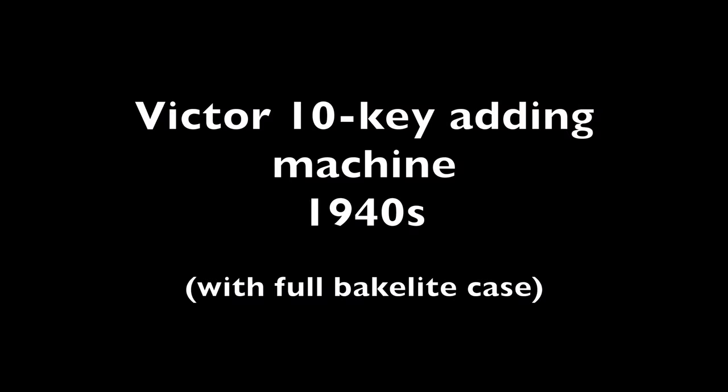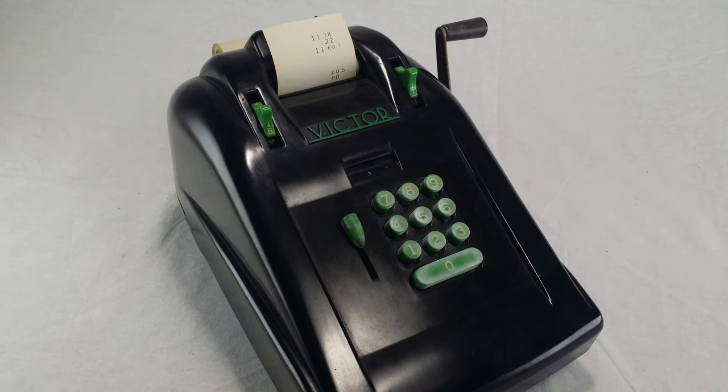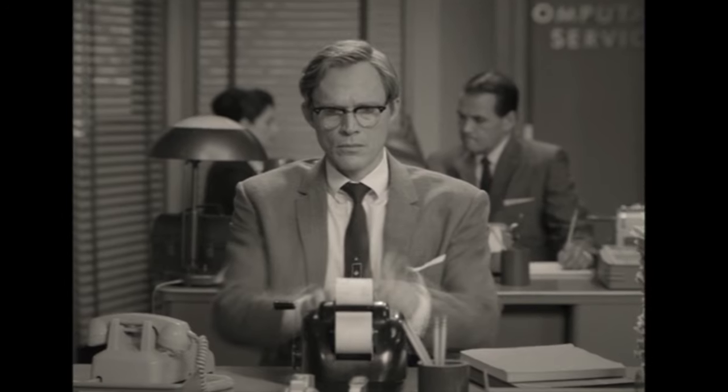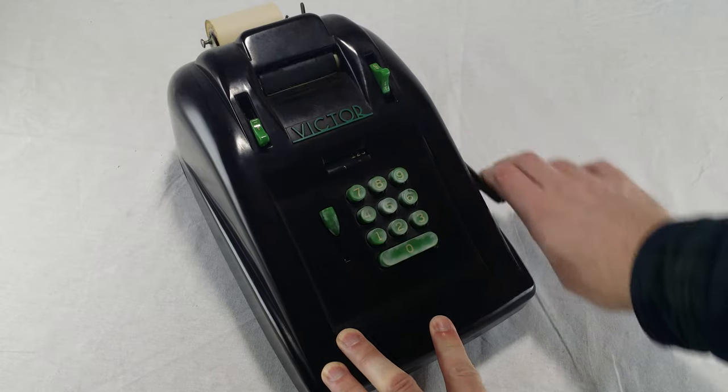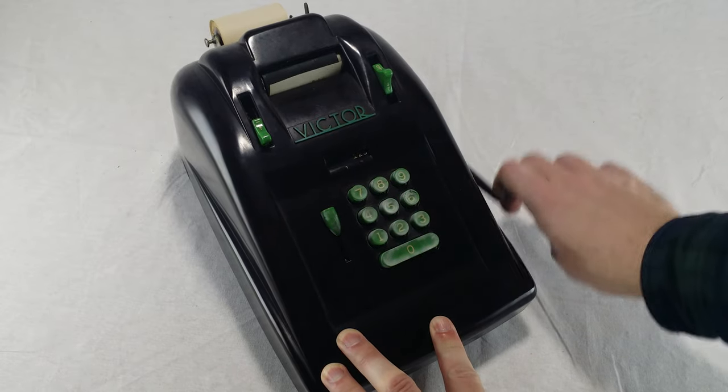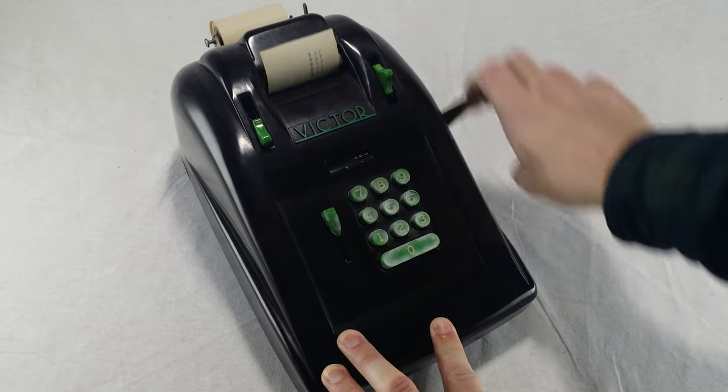A Victor 10 key machine. This is the same model the Vision uses. You can turn the crank every time to add repeatedly, but the 10 key design means you don't have to retype the number, so it's a little faster.